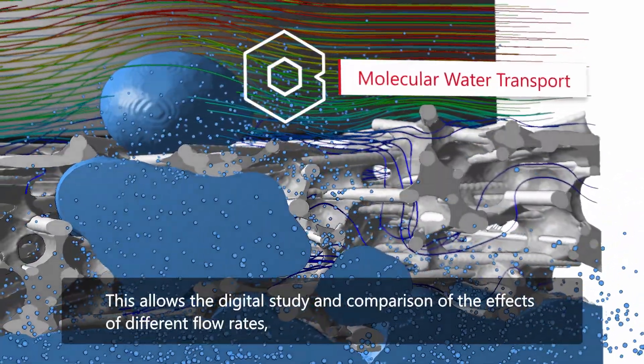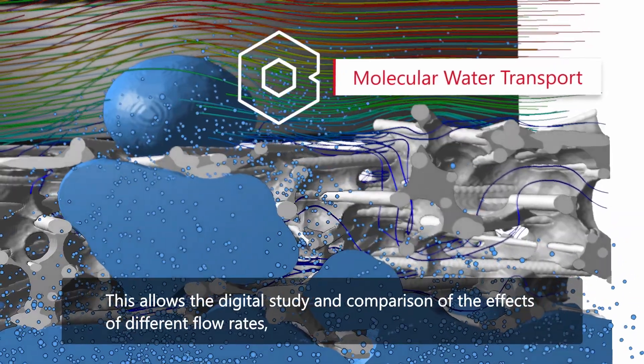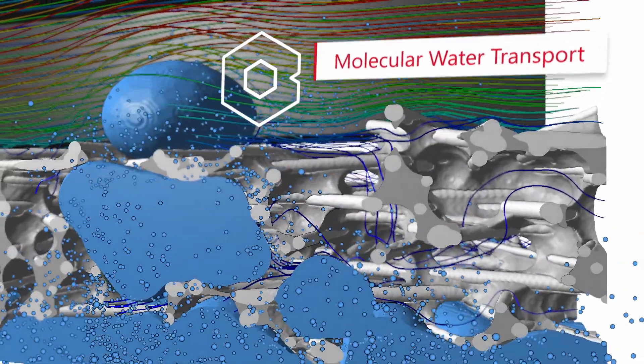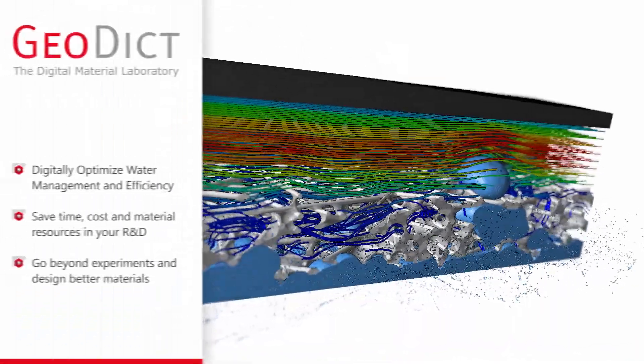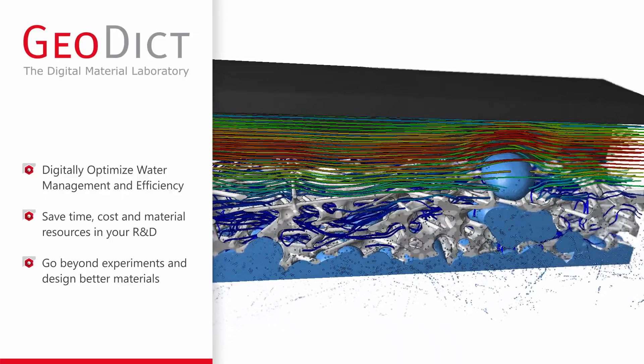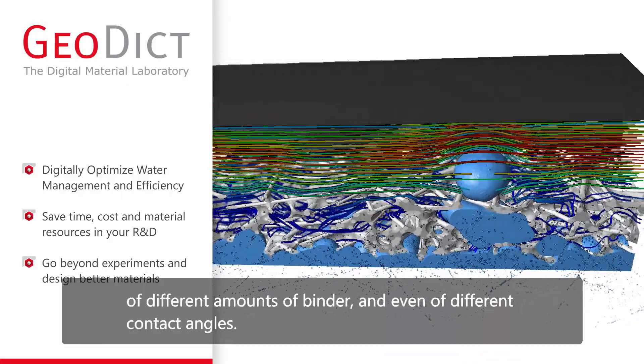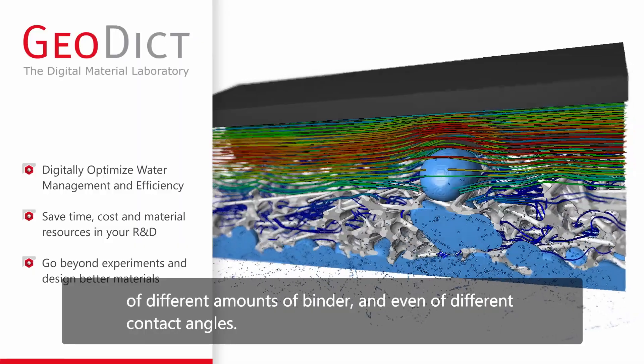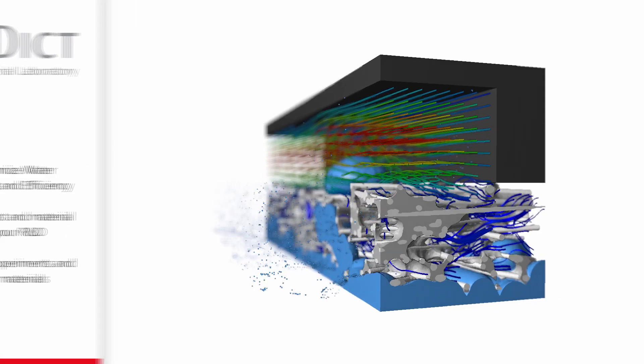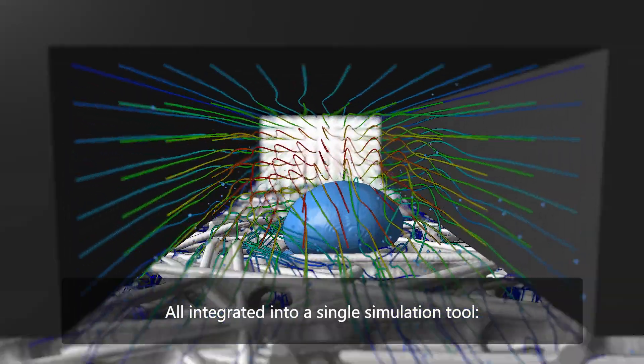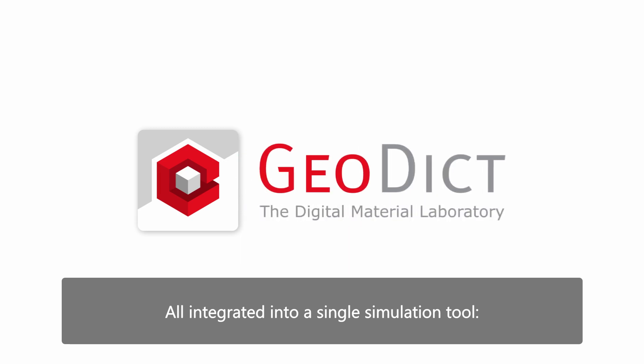This allows the digital study and comparison of the effects of different flow rates, different water production rates, different amounts of binder, and even different contact angles, all integrated into a single simulation tool: GeoDict.